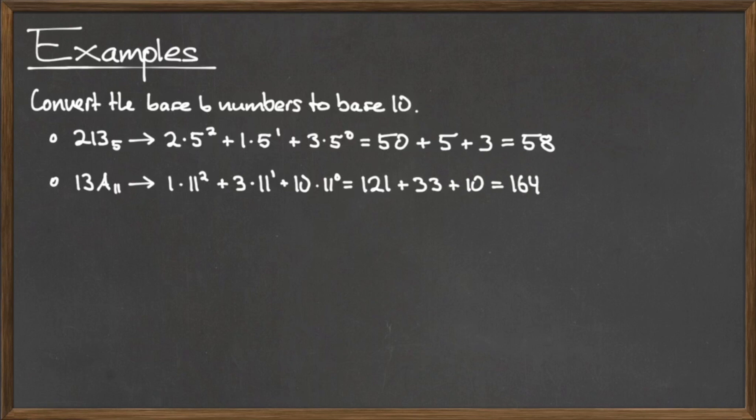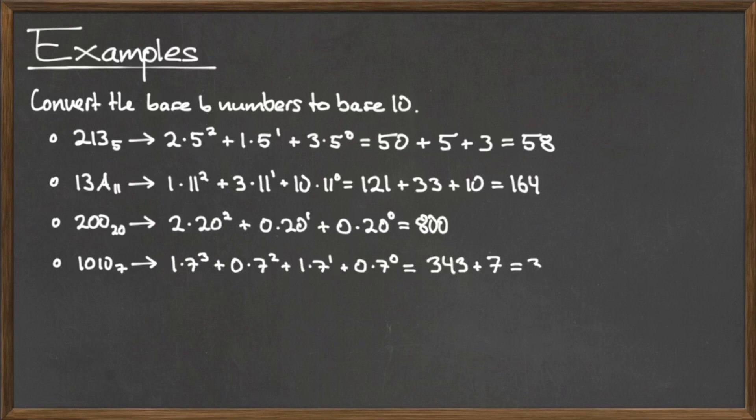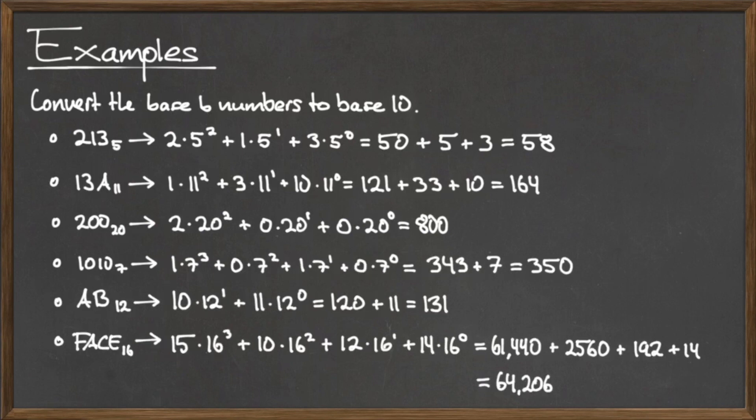Continuing this process for the remainder of the examples, we see that the number 200 written in base 20 is the base 10 number 800. The number 1010 written in base 7 is the base 10 number 350.